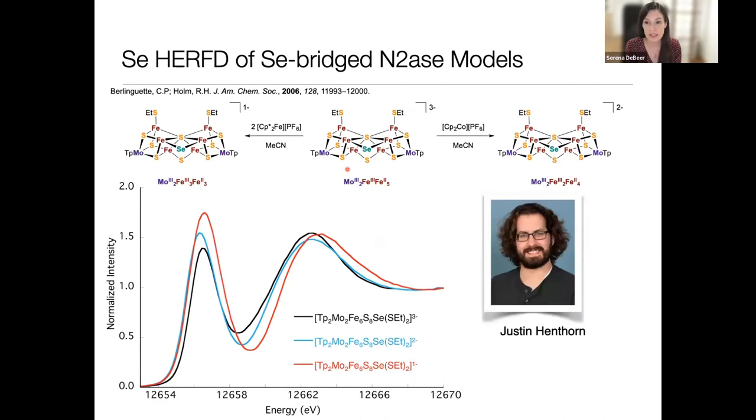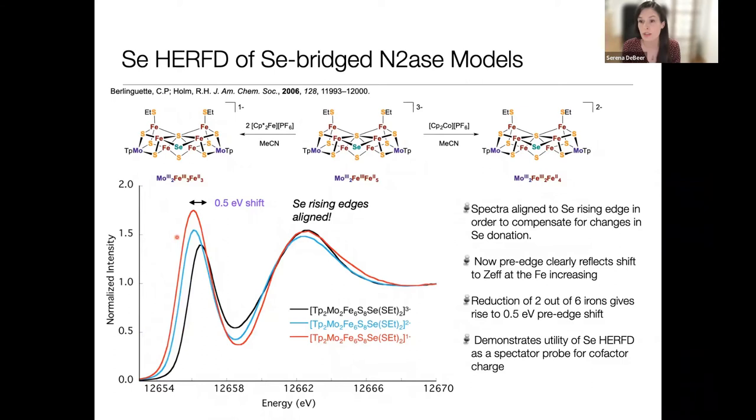Justin first synthesized model complexes that look a bit like FeMoCo that incorporate selenium, and looked at different redox levels. What you see is that there are changes in the pre-edge consistent with changes in redox. The most oxidized has the most intense pre-edge, the most reduced has the least intense pre-edge. If we align the rising edge, we can also see there are some shifts. The shifts are smaller than what I showed you in the previous slide, and we surmise that's because the event is delocalized over this large cluster. Chemically, that feels intuitive to me.